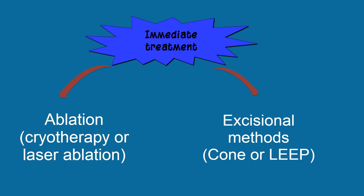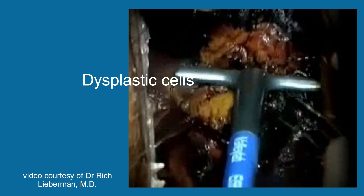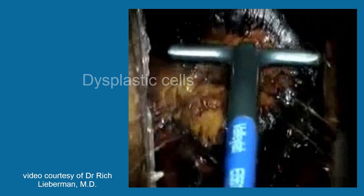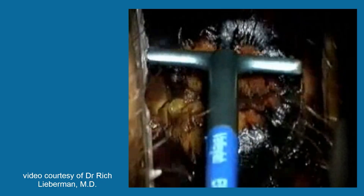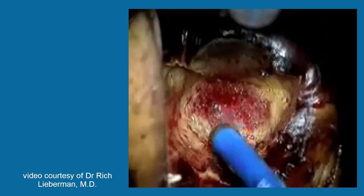Both a cone biopsy and LEEP procedure excise the transformation zone. The following video, courtesy of Dr. Rich Lieberman, shows a LEEP procedure. The cervix has been treated with Lugol solution, which stains normal tissue with iodine; dysplastic cells appear non-stained or white. A loop electrode is used to excise the transformation zone, and then a roller ball cautery is used to obtain hemostasis.